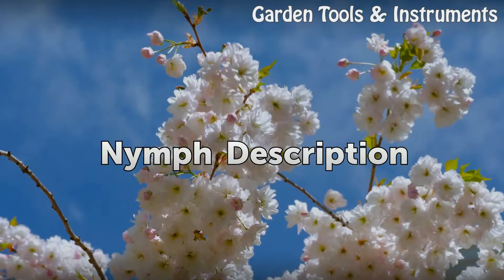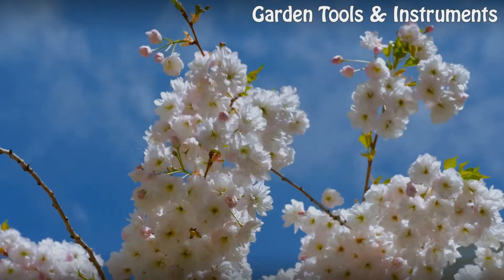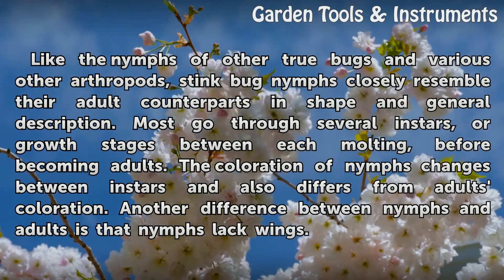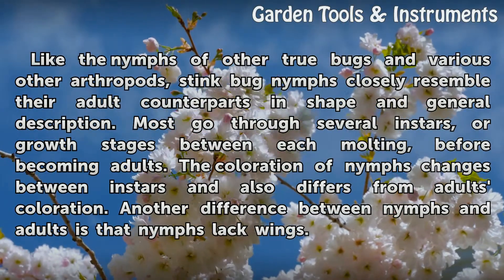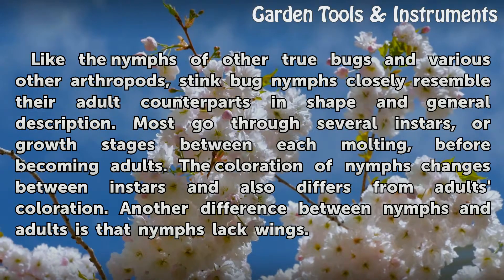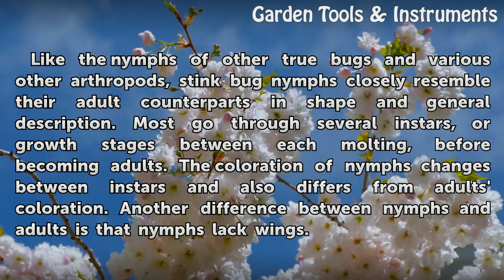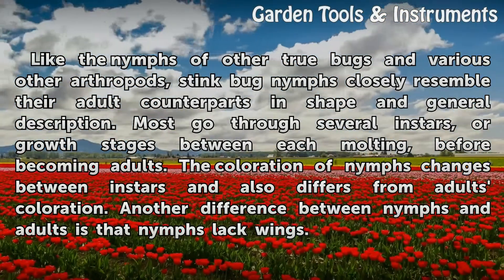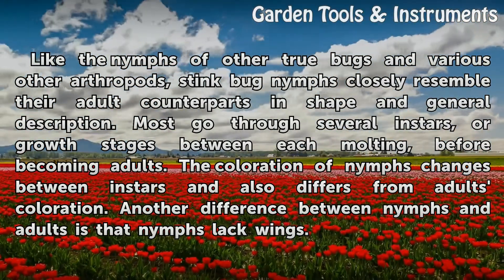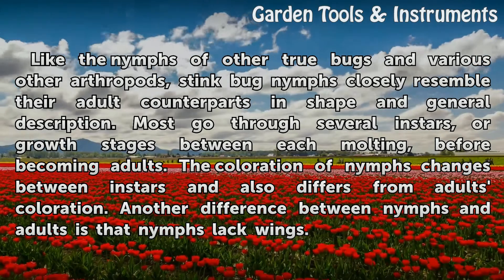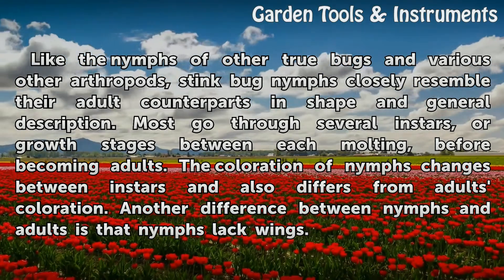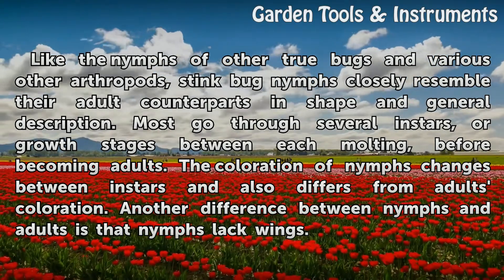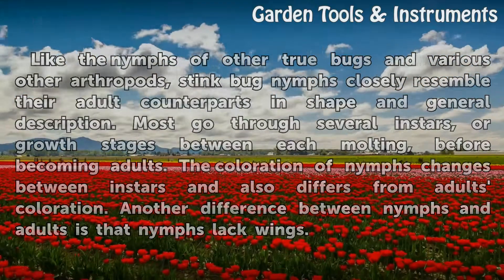Nymph Description. Like the nymphs of other true bugs and various other arthropods, stink bug nymphs closely resemble their adult counterparts in shape and general description. Most go through several instars, or growth stages between each molting, before becoming adults. The coloration of nymphs changes between instars and also differs from adults' coloration. Another difference between nymphs and adults is that nymphs lack wings.